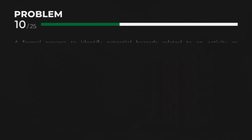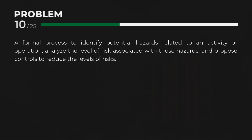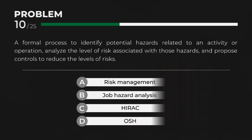A formal process to identify potential hazards related to an activity or operation, analyze the level of risk associated with those hazards, and propose controls to reduce the levels of risks. Answer: C. Hazard identification, risk assessment, and control.